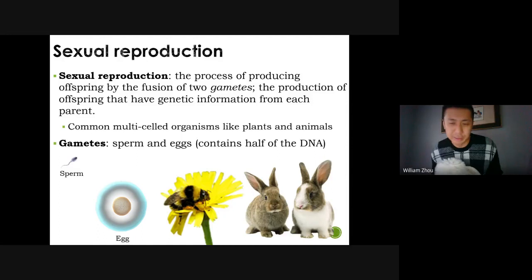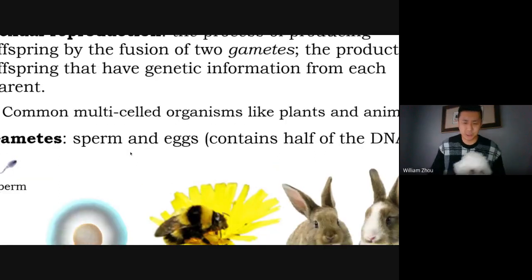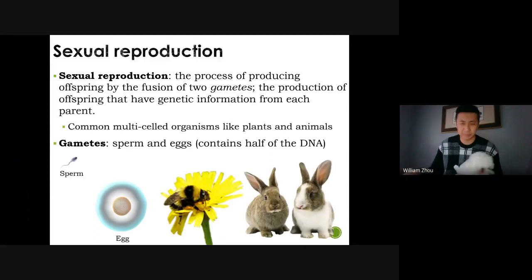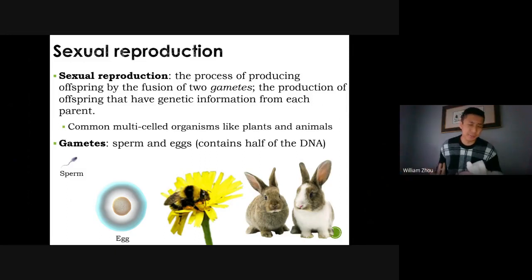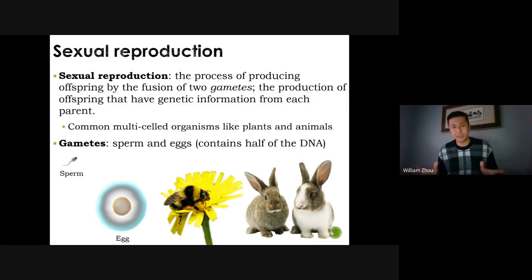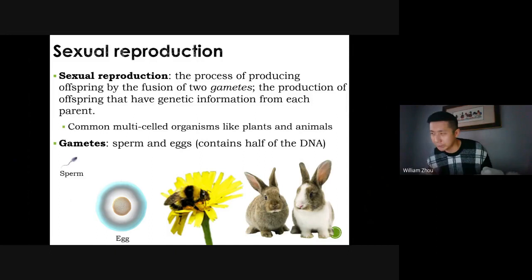Animals mostly use sexual reproduction. The advantages are that you get more variety — you're not making clones of yourself. If you're a bacterium making clones and a virus comes that targets you, all your clones will be susceptible because you're all the same. With sexual reproduction, mixing DNA with someone else increases the variety in the population, so one virus wouldn't kill everyone.